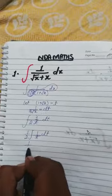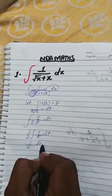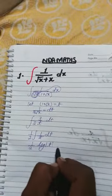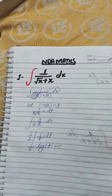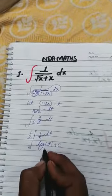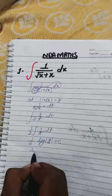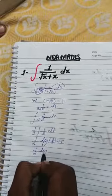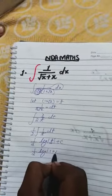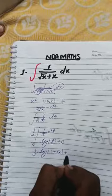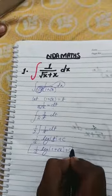जैसे कि हम जानते हैं one upon t की value क्या होती है? Log में t plus c लिखते हैं constant. अब हम t की value put कर देते हैं equation में. Log, t की value क्या थी? 1 plus under root x plus c. हमारा answer आ गया है. Thank you.